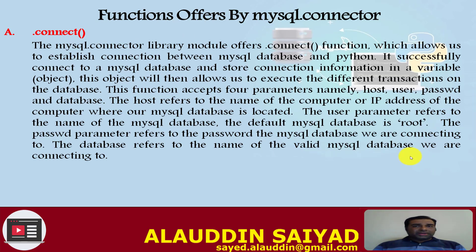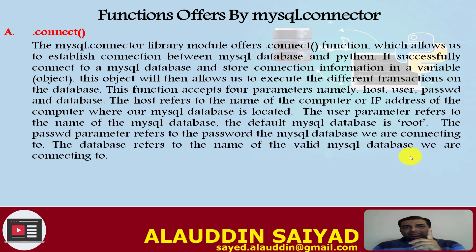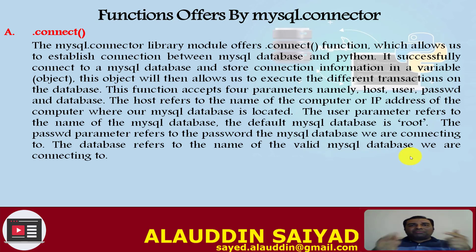The mysql.connector library offers a connect() function that establishes a connection between the MySQL database and Python. It successfully connects to a MySQL database and stores the connection information in a variable. One Python object represents a connection to one database; a database can be connected from multiple objects simultaneously, but one connection points to exactly one database at a time.